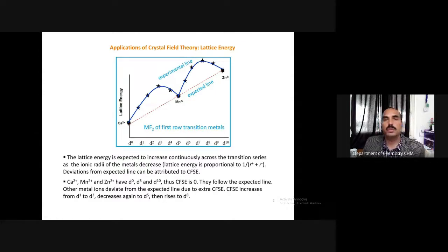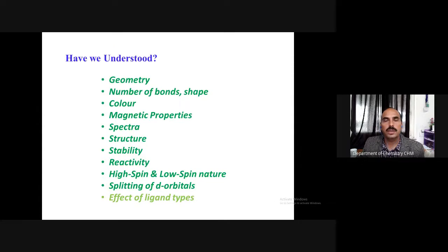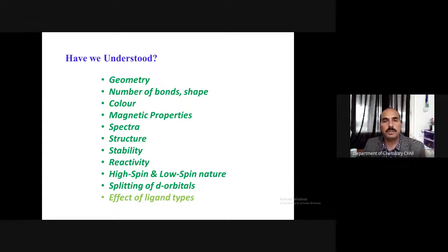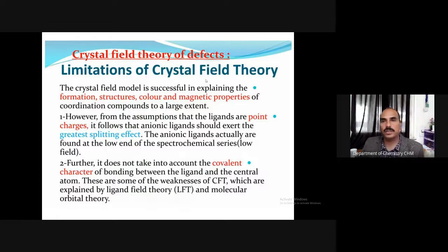Crystal field theory allows us to explain almost all properties of metal complexes: geometry, number of bonds, shape, color, magnetic properties, spectra, structure, stability, reactivity, high spin and low spin nature, splitting of orbitals, and the effect of ligand type. However, it is not a perfect theory. There are some limitations: it assumes ligands are point charges and does not consider covalent bonding at all.